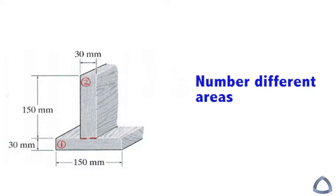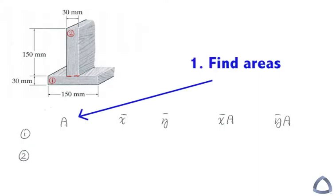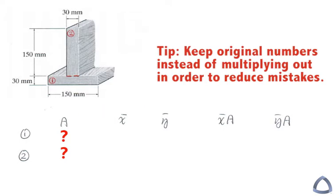And then what you're going to do is set up a nice table so that you can calculate the area for area number one and area number two. I highly recommend you keep the original numbers here in case you make any mistake, so it's not carried over to the final results.